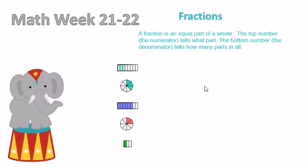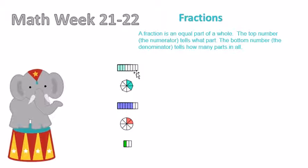Let's do these. We count them in all and we go one, two, three, four, five, six, seven, eight. And three shaded in will give us three eighths in number.